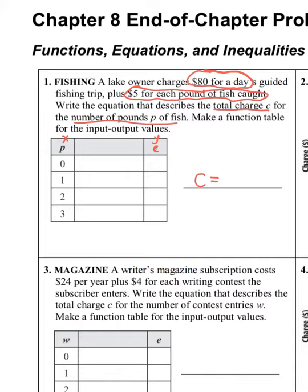Remember, it's $80 no matter what plus $5 for each pound of fish caught. If you catch zero pounds of fish, you still pay $80. If you catch one pound, that's $80 plus $5, which is $85. Two pounds is $90, and three pounds is $95. Now, can we come up with a function rule from that pattern?